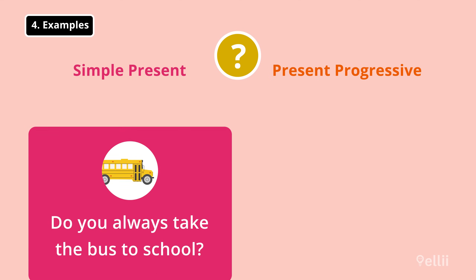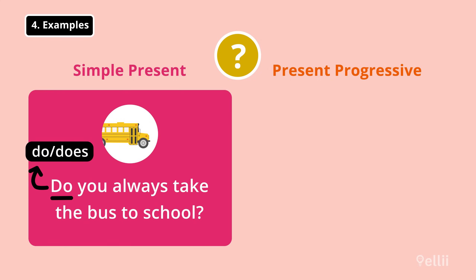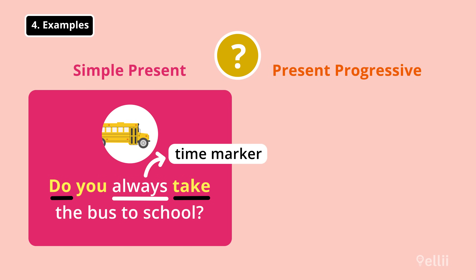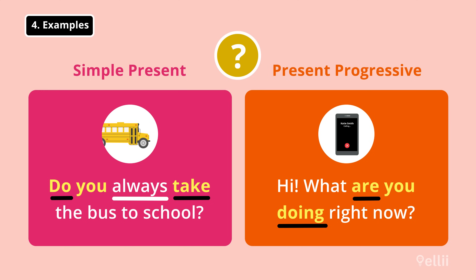Now let's look at some questions. Do you always take the bus to school? Just like with negative sentences, we need the auxiliary verb do or does to form a question in the simple present. Since the subject is you, use do with the main verb take. What are you doing right now? In the present progressive tense, the auxiliary verb be has to start the question. It becomes are when the subject is you, and the subject is followed by doing, an ing verb.